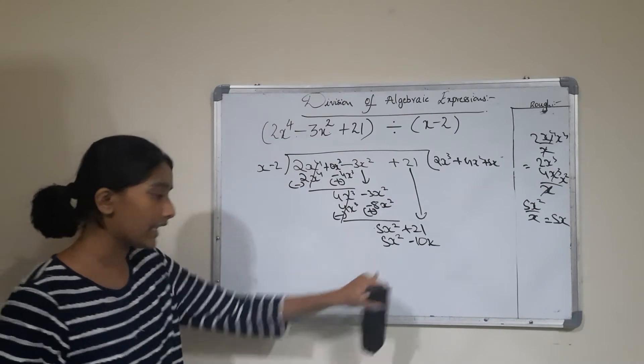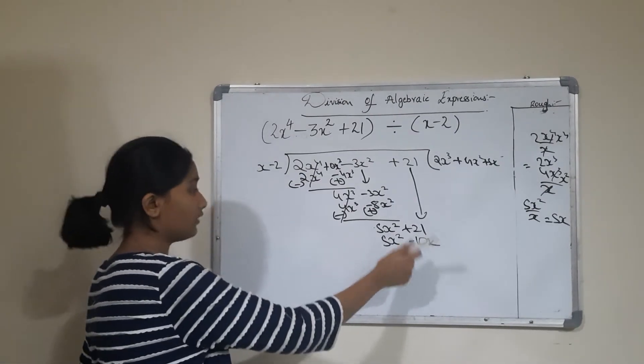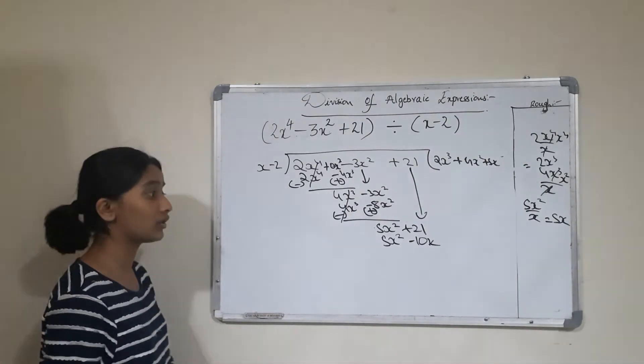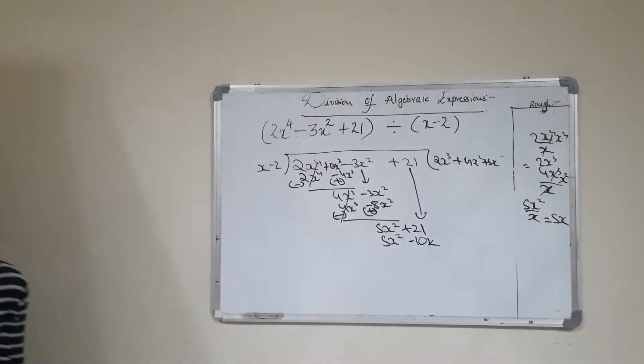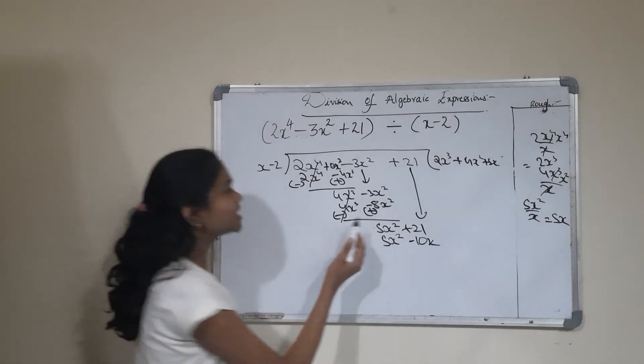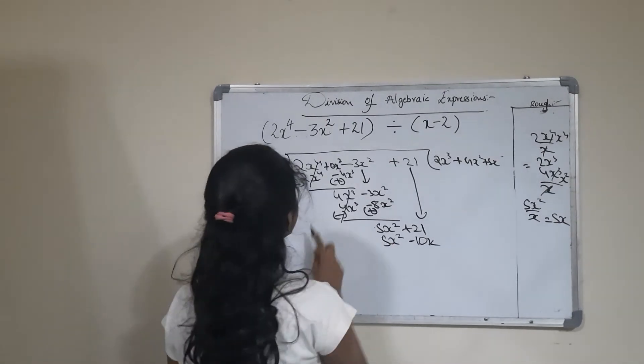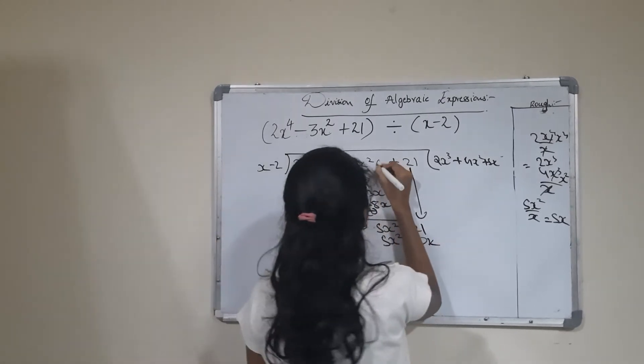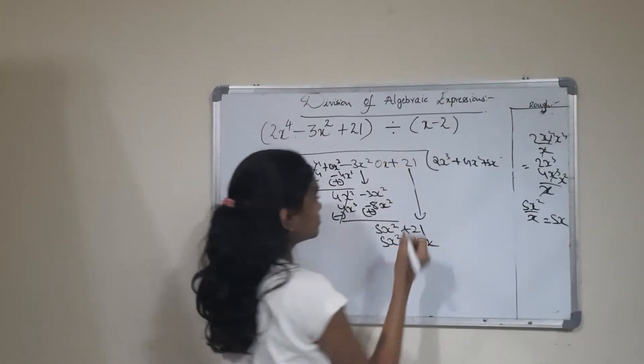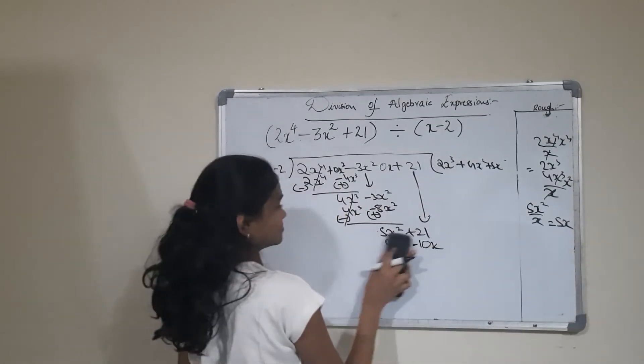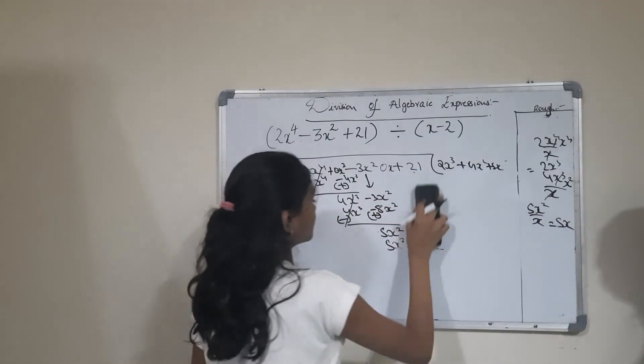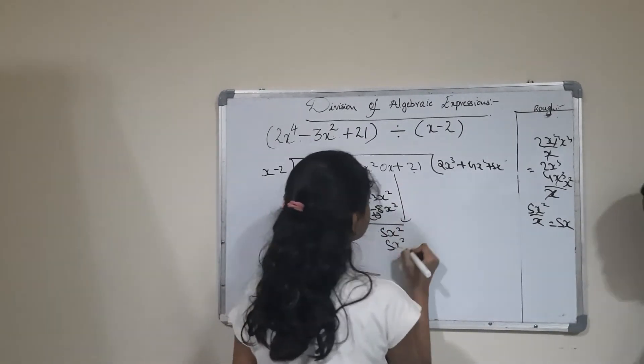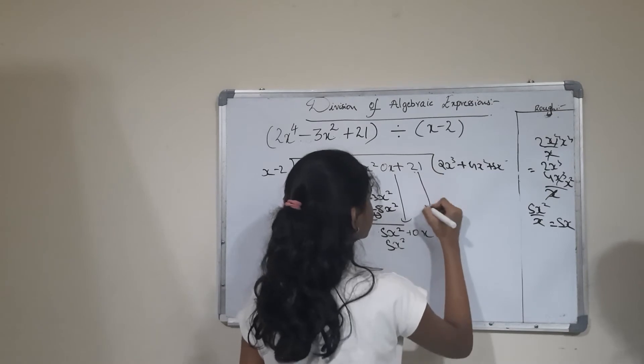But here I see this is a numerical term and this is a variable, so I have a doubt. My friend Mamika will explain this. Mamika says: In this expression, there's no x term, so we need to add a 0x term, then bring down these terms.